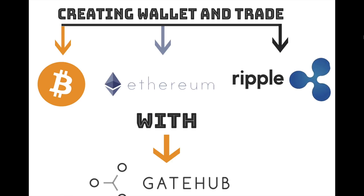Hello and namaste, welcome to my channel Nepal Station and welcome to my new episode of cryptocurrency. Today I'm going to talk about how to create a wallet for Bitcoin, Ethereum, Ripple and other cryptocurrencies with GateHub, how to use the trade options, and how to exchange Bitcoin into Ethereum and vice versa with other cryptocurrencies available in the market. So let's get started.